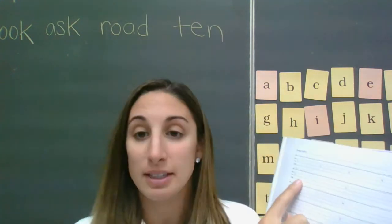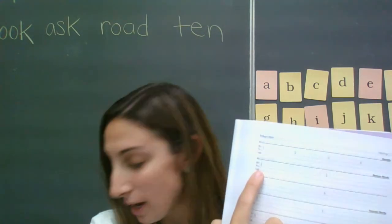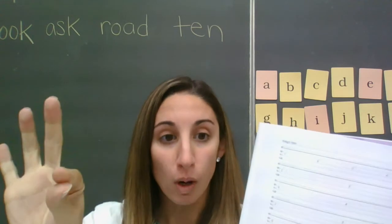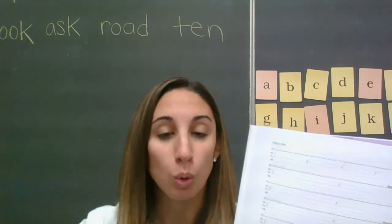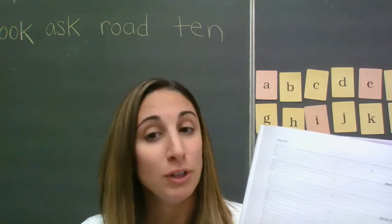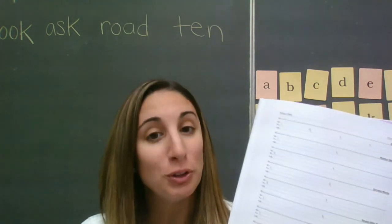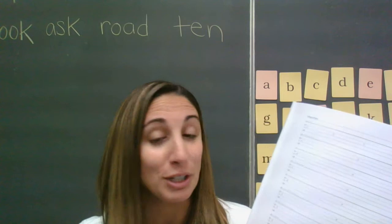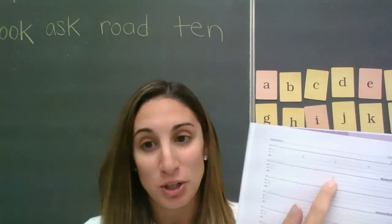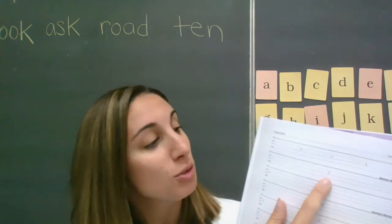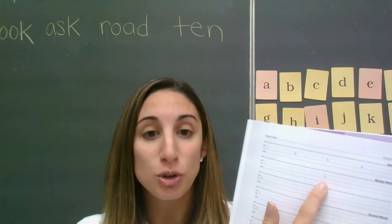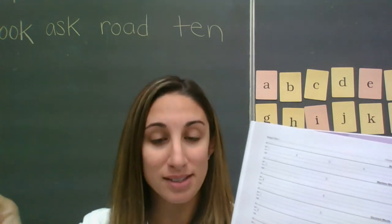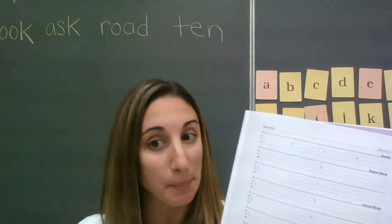Now we're going to move down to the next row where it says review words. Find number one and I want you to write quiz. Let's tap it. Qu - eh - z. Quiz. If you don't have your composition book at home, you could be writing this down on a plain sheet of lined paper and bring it back to your teacher whenever you come back to school. Number two, move across the page. The next word I want you to write is trust. Let's tap it. T - r - a - s - t. Trust. I trust that you are doing this work independently at home.